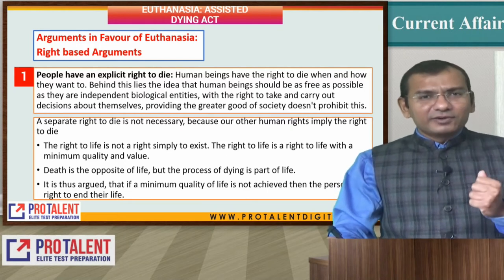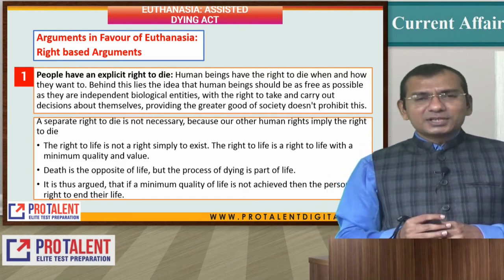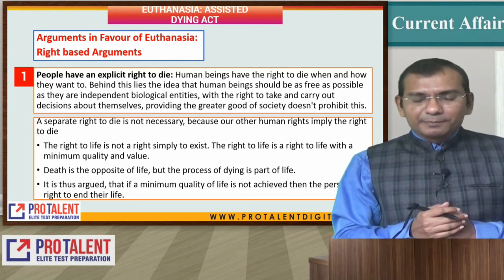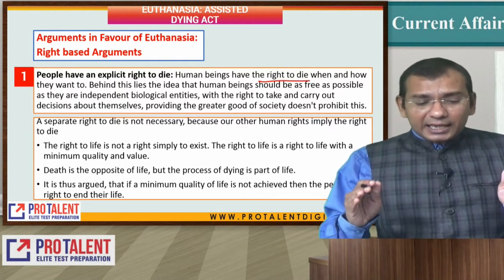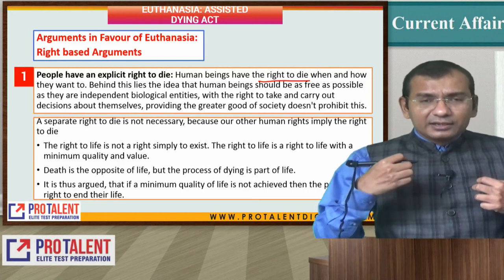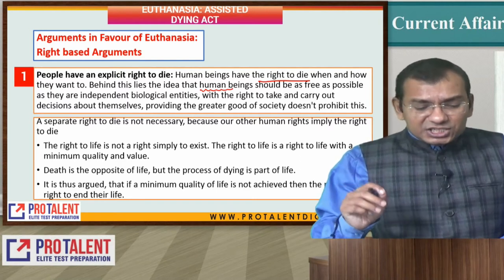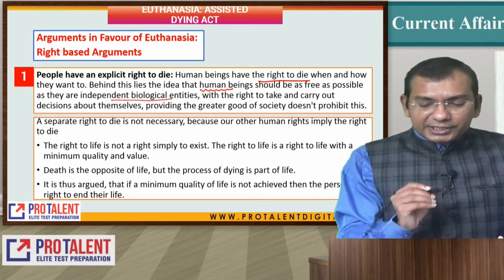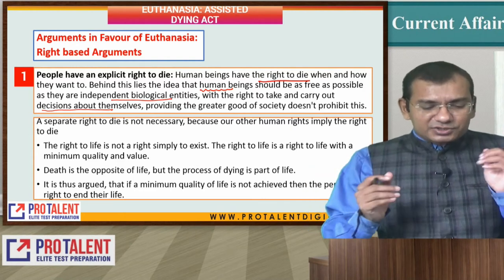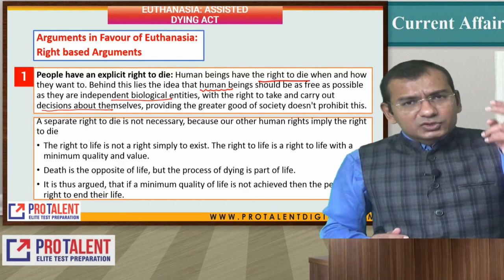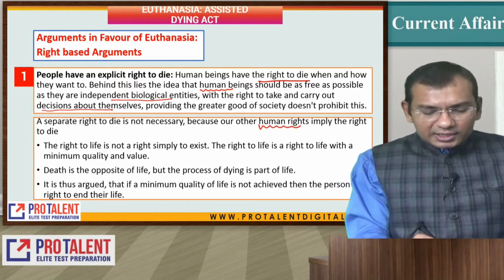Let us see what are the arguments in favour of euthanasia. There are so many movies and books written about it. People must have an explicit right to die. Human beings have the right to die when and how they want to. The idea is that human beings should be free — they are independent biological entities with the right to take and carry out decisions about themselves. A separate right to die is not necessary; it is already included in the right to life.